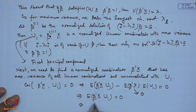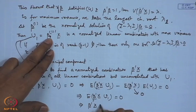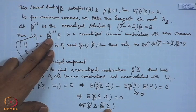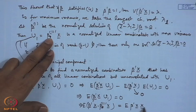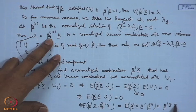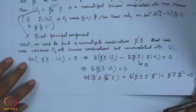This condition E[β'x · u₁] = 0 is equivalent to β' · E[x · x' · β₁] = β'σβ₁ = 0. So the uncorrelation condition reduces to β'σβ₁ = 0.